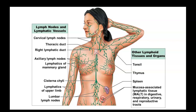You have the cisterna chyli, which helps to service the abdominal cavity and the digestive organs. You have lymphatics of the upper limb going down the arm region, and lumbar lymph nodes found in the lower abdomen. Other lymphoid tissues and organs include tonsils, the thymus — which is very important for helping T lymphocytes mature — the spleen, which is important in filtering, and mucosal-associated lymphatic tissue, often referred to as MALT, in the digestive, respiratory, urinary, and reproductive tracts.